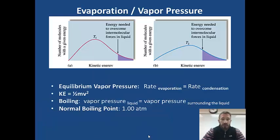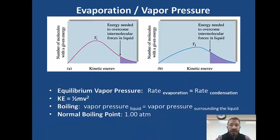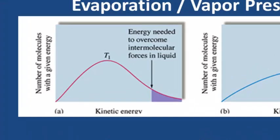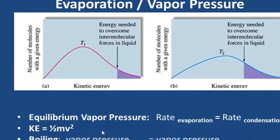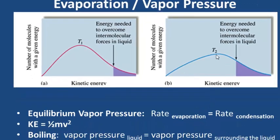Let's look at these two curves. On the x-axis we have kinetic energy, which is the same as temperature. The kinetic energy of the second graph — the average, which is the middle of the hump — T2 is higher than T1. So the second graph is at a higher temperature, which means it has more kinetic energy. Higher temperature means more kinetic energy.